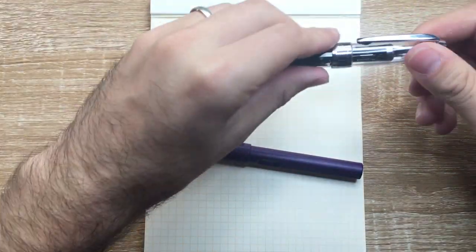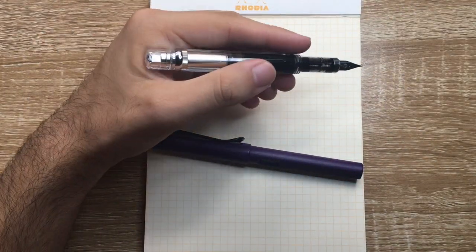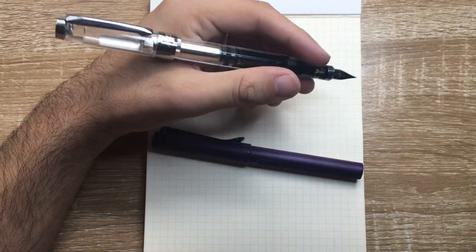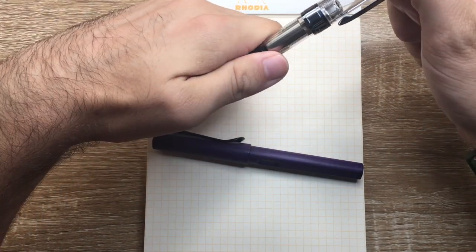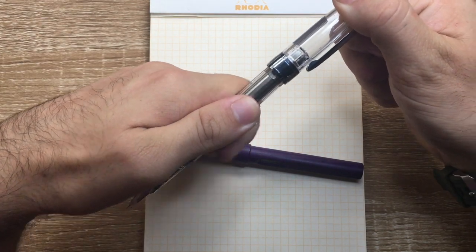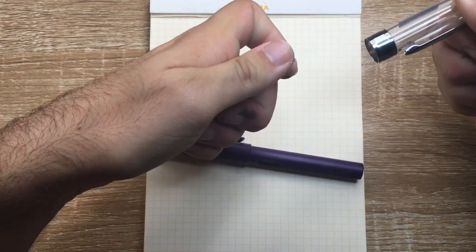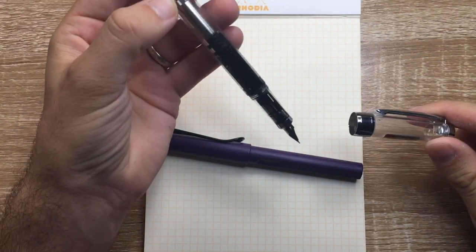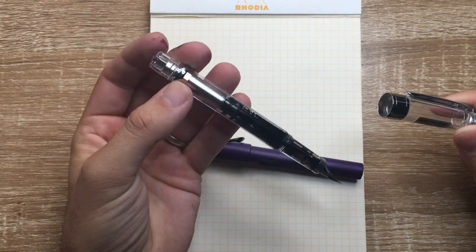When it is uncapped it is 128 millimeters and posted which it does post but quite long it's 168. Now this is an advantage it has over the 580 which does not post and when it does it posts onto the knob as opposed to onto the metal band.